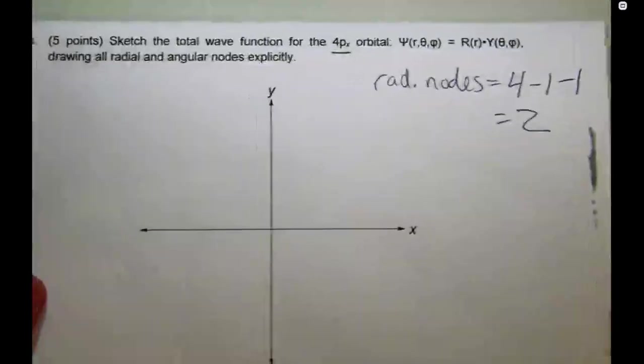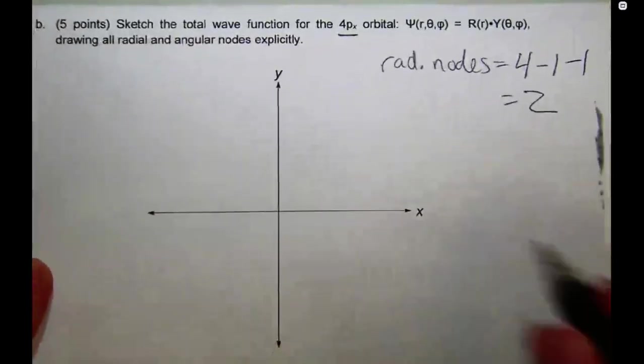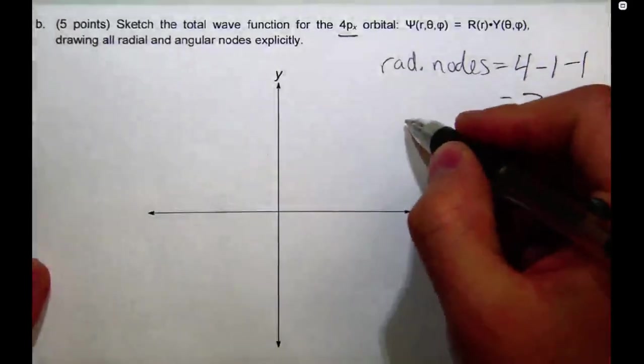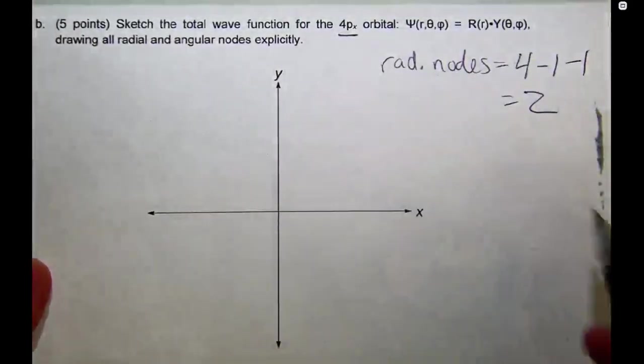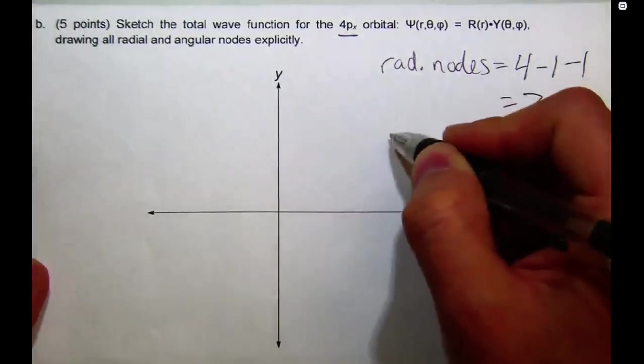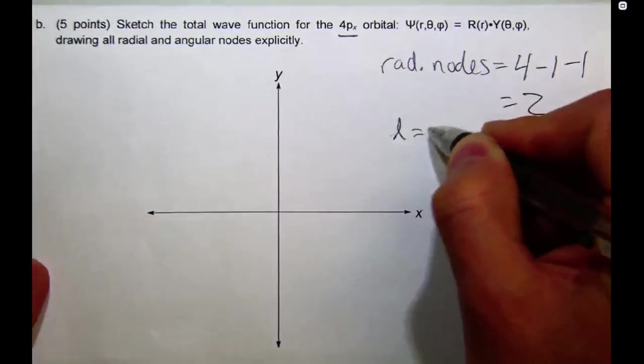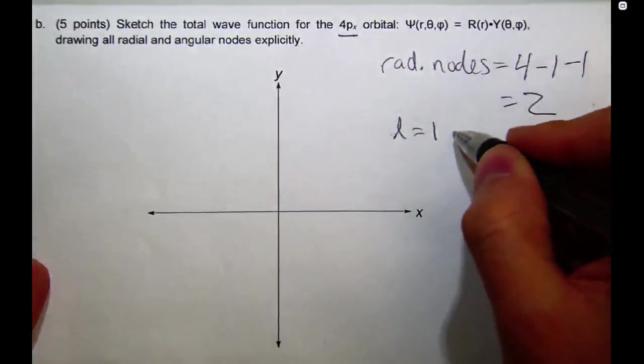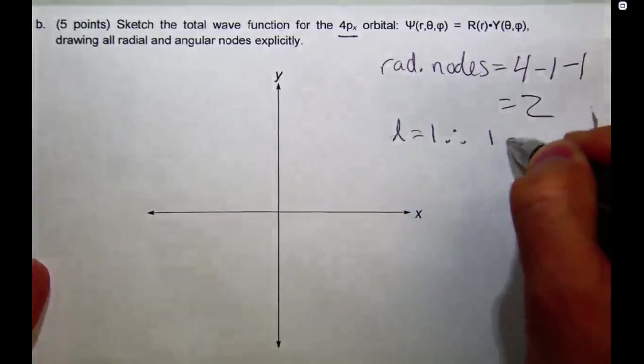Alright, so we've got our radial nodes, and we also need our angular nodes now, because we're going to be drawing the picture. Angular nodes are just, the number of angular nodes is always equal to L, or the angular momentum quantum number. So, L equals 1 for a p orbital. So, we have one angular node.